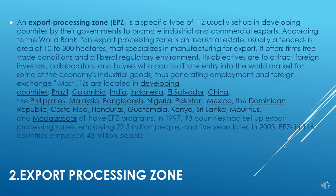Most free trade zones are located in developing countries like Brazil, Colombia, India, Indonesia, El Salvador, China, Philippines, Malaysia, Bangladesh, Nigeria, Pakistan, Mexico, the Dominican Republic, Costa Rica, Honduras, Guatemala, Kenya, Sri Lanka, Mauritius, and Madagascar — all of which have export processing zone programs. In 1997, 93 countries had set up export processing zones employing 22.5 million people, and five years later in 2003, EPZs in 116 countries employed 43 million people.